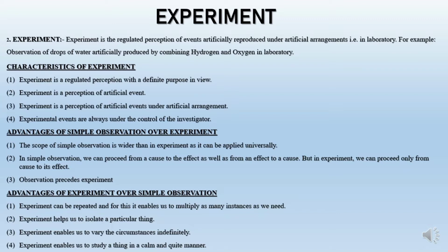What are the characteristics of experiment? Number one, experiment is a regulated perception with a definite purpose in view, as it is a kind of observation. Secondly, experiment is a perception of an artificial event — in the case of experiment, we have to produce the event. Thirdly, experiment is a perception of those artificial events under artificial arrangement.